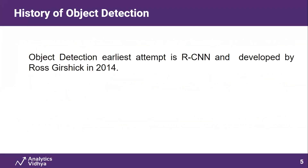When we look at the history of object detection, the first attempt was RCNN, developed by Ross Girshick in 2014 at Microsoft labs with his team. This was the first starting point — the foundational stone — for object detection using bounding boxes.